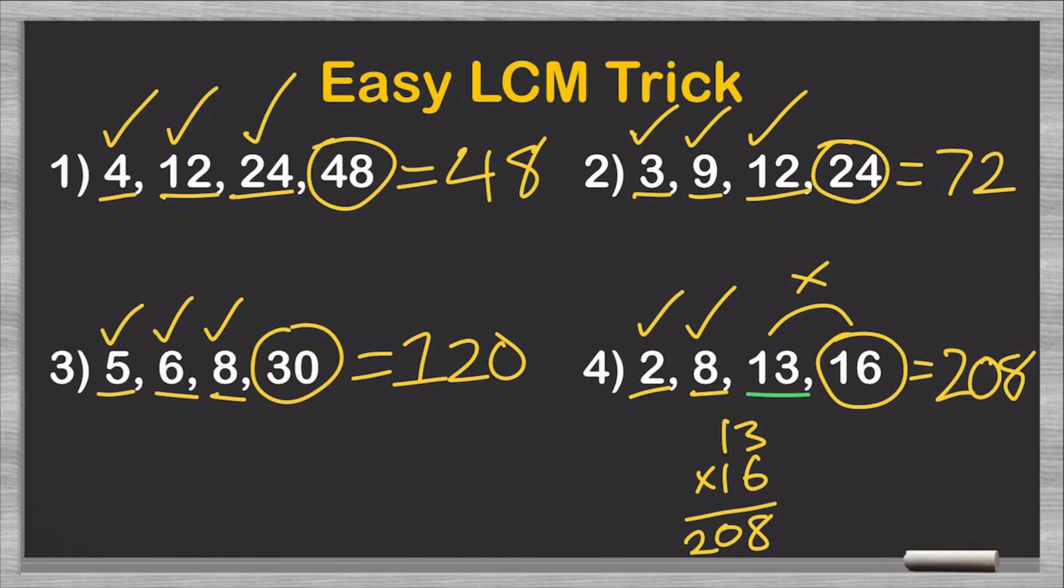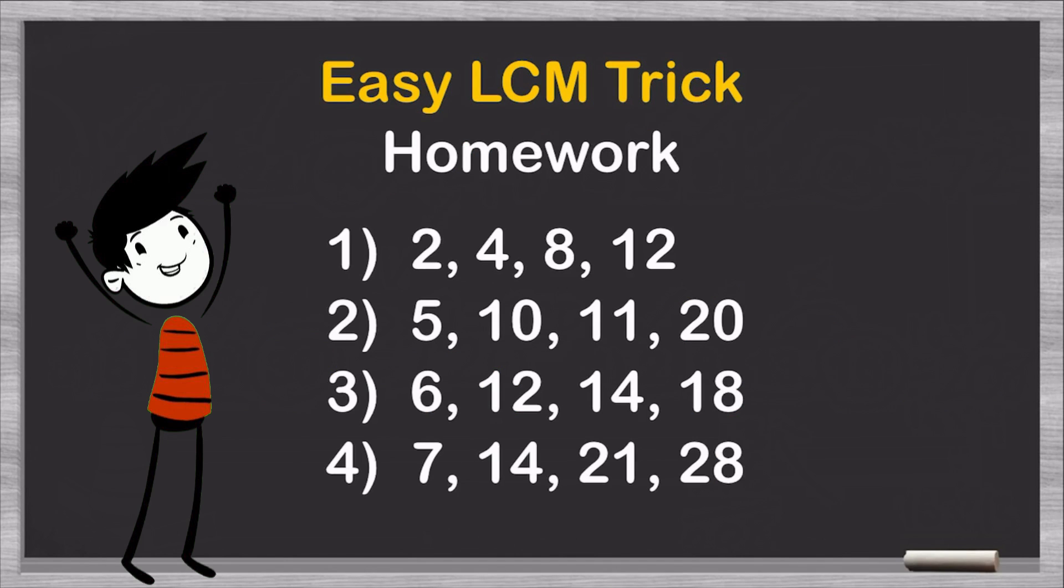So, now that we've taken a look at this easy least common multiple trick, it's time for some homework. Try to figure out what the least common multiples of these following groups are. The first one is 2, 4, 8, and 12. The second one is 5, 10, 11, and 20. The third one is 6, 12, 14, and 18. And the last one is 7, 14, 21, and 28.